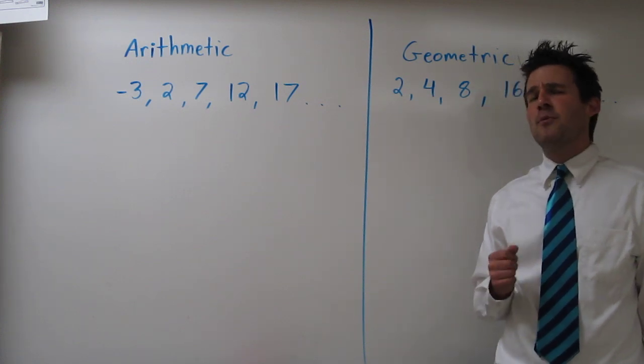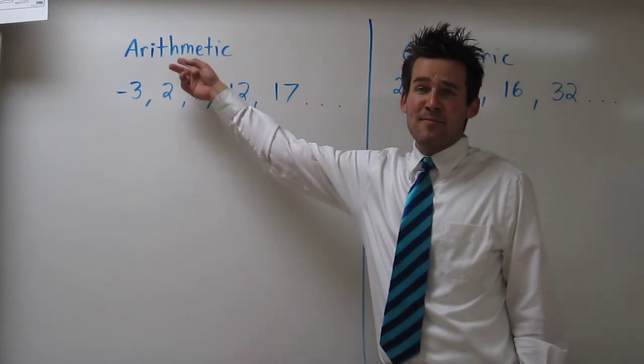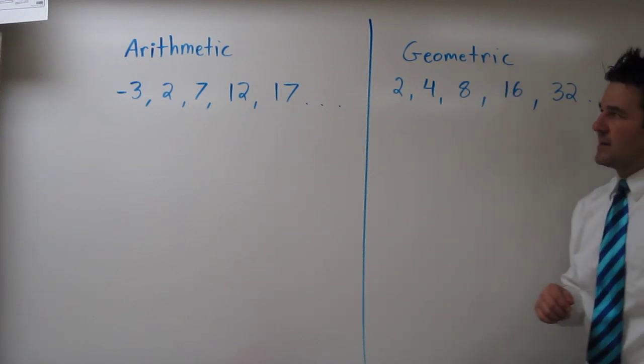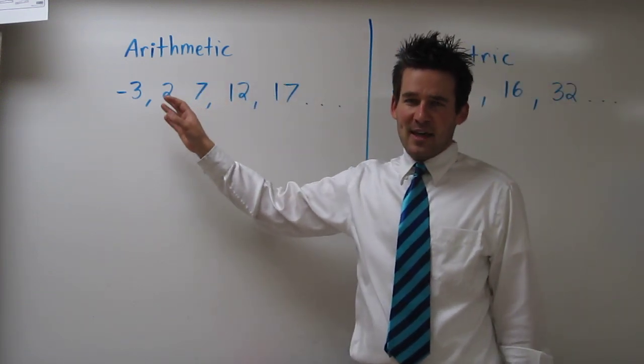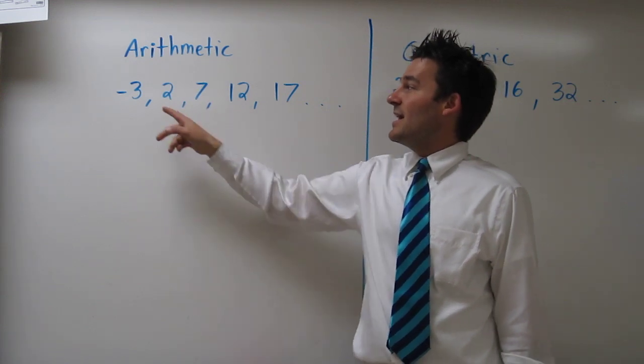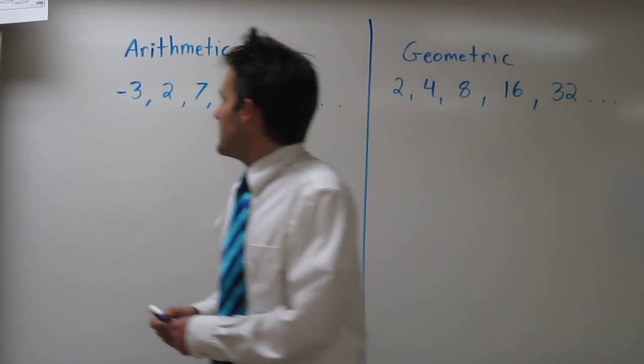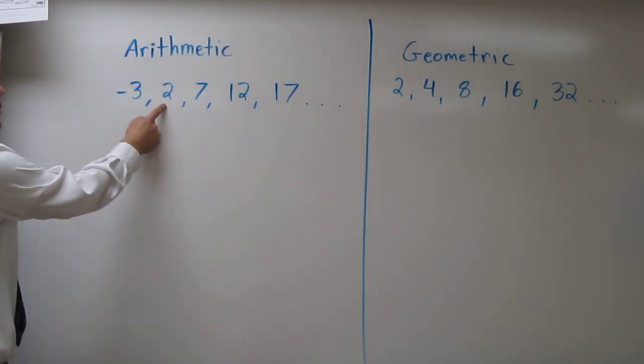Today we're going to talk about two really important sequences, the arithmetic and the geometric sequences. Let's start with the arithmetic. In the arithmetic sequence, each consecutive term differs by a constant amount. That means if you take 2 and subtract negative 3, you get 5.